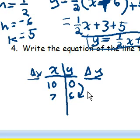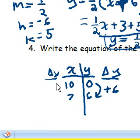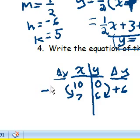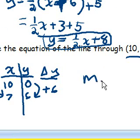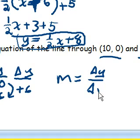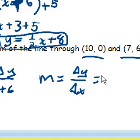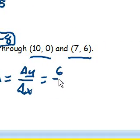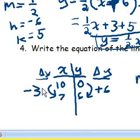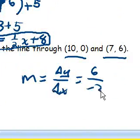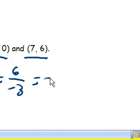Going from zero to six is a change of positive six. Going from ten to seven is a change of negative three. We know that our slope is change in y divided by change in x. Change in y is six. Change in x is negative three. Six divided by negative three is negative two. Hi-yo, we just found our m.